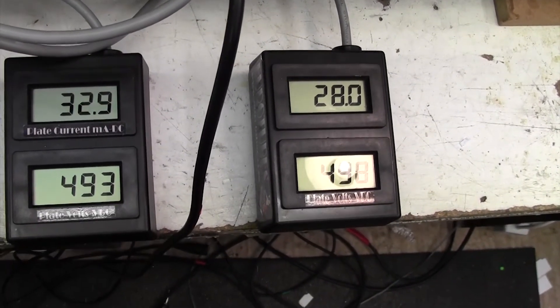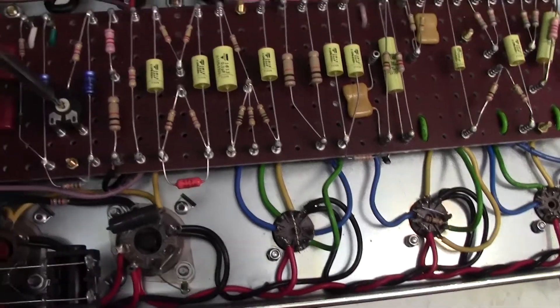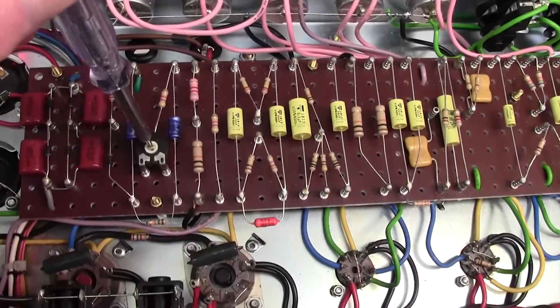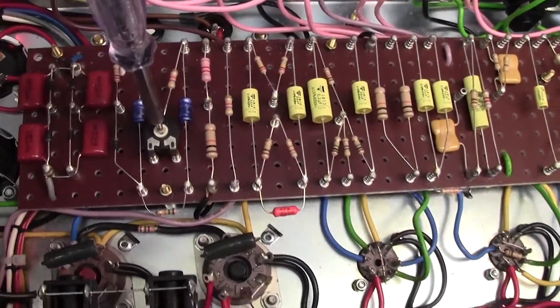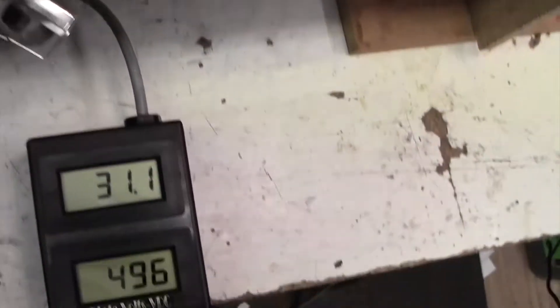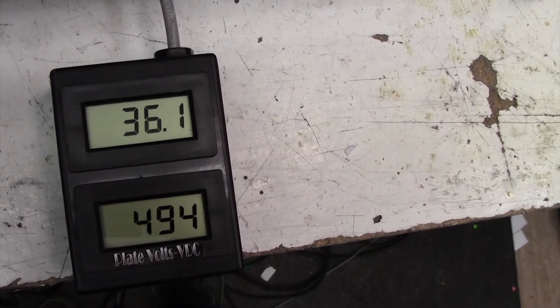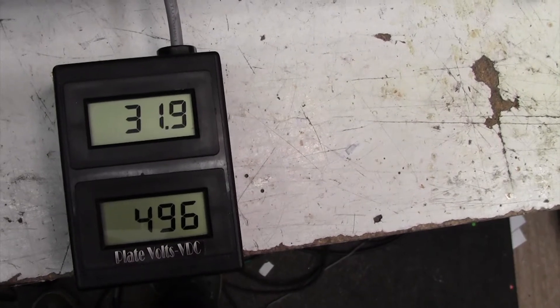Let me now just show you the bias pot, and that is here where I've got my screwdriver in. Turning the pot clockwise increases the bias current, and turning it anti-clockwise, which is what I'm doing now, decreases the bias current.